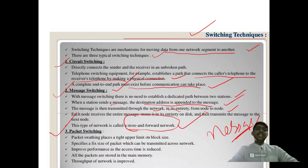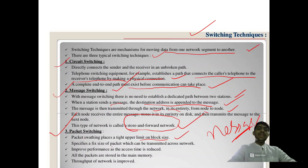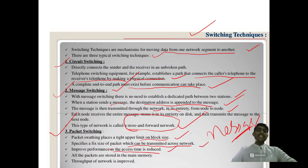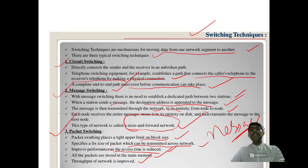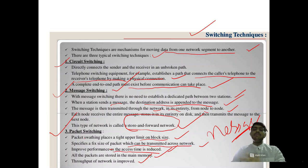Packet switching places a tight upper limit on block size. The message is divided into a smaller number of packets of a fixed size, which can be transmitted across the network. It improves performance as the access time is reduced, and all packets are stored in the main network. Comparing circuit switching, message switching, and packet switching, the better one is packet switching because the whole message is broken into different packets and sent one by one, making it easier for sender and receiver.